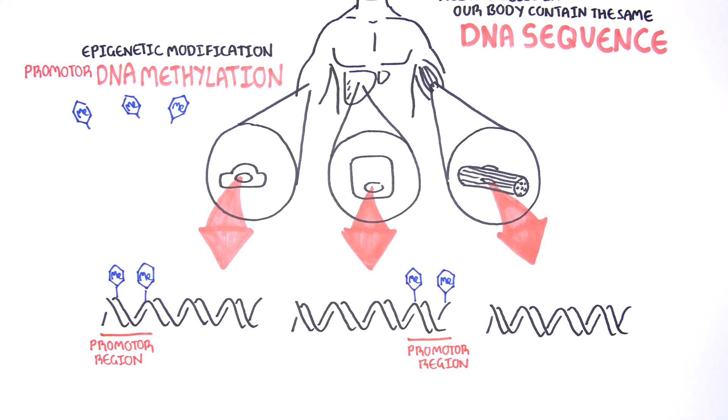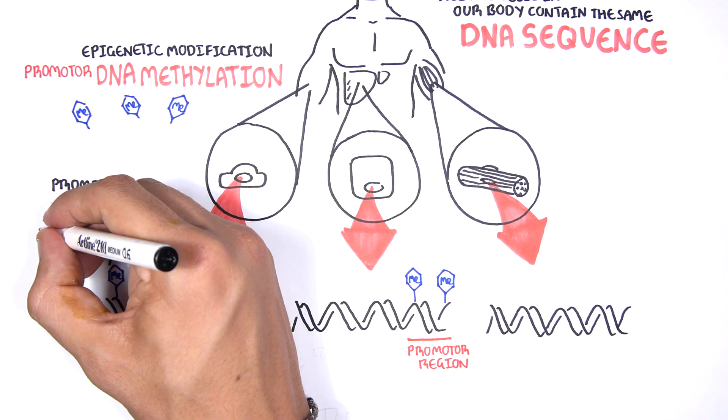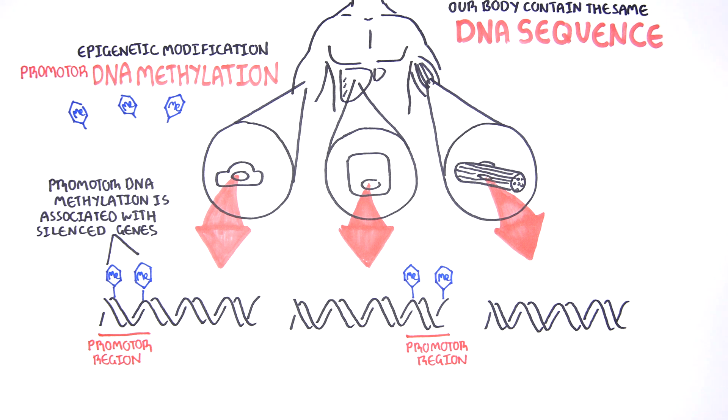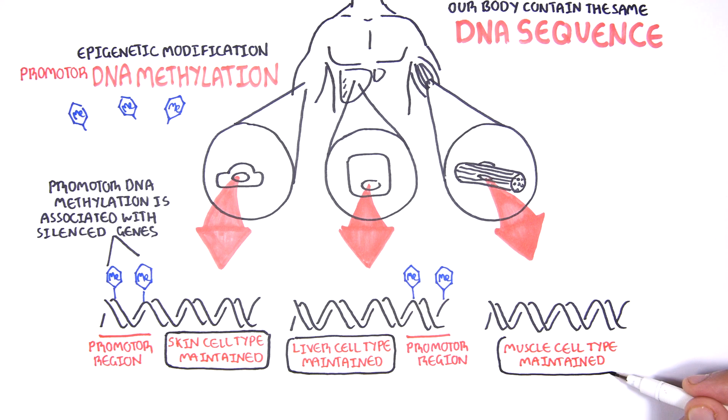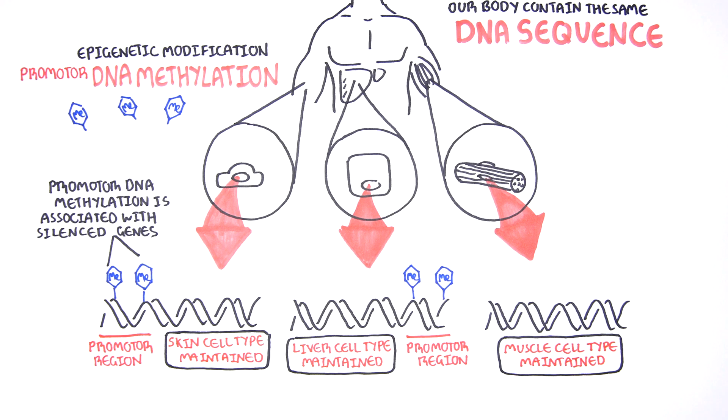Promoter DNA methylation is associated with gene silencing and plays an important role in maintaining cell types. In cancer, DNA methylation patterns are altered and disrupted.